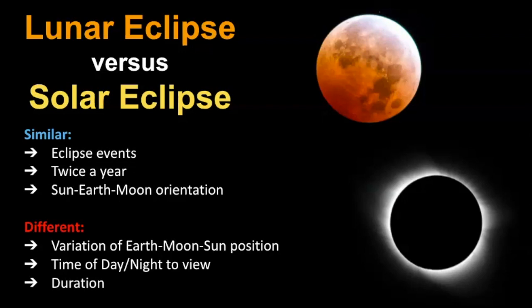They're similar because they're eclipse events. Generally, they happen about twice a year, and they happen because of the sun, Earth, and moon orientation to each other. They're different because of the variation of that position of the sun and Earth and the moon. And it's also different in terms of the time and day you can view them. Remember that a solar eclipse is viewed during the day. You need eye protection to see it, where a lunar eclipse is viewed at night at the full moon, and you're safe to look at it without eye protection. Also, the duration of it is different as well.